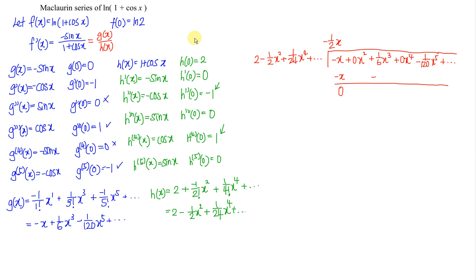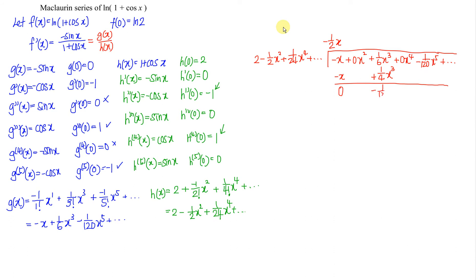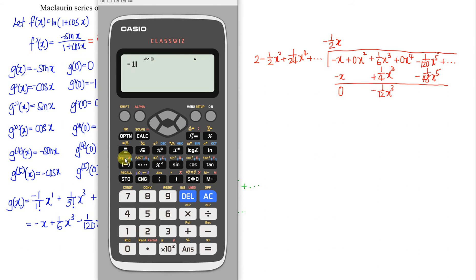Continuing the long division: negative times negative gives positive, giving 1 over 4 times x cubed for the subtraction. We then subtract: 1 over 6 minus 1 over 4 equals negative 1 over 12, giving negative 1 over 12 times x cubed. For the next term, x times x to the power of 4 gives x to the power of 5. Negative, positive, negative: 1 over 48, so we have negative 1 over 120 minus negative 1 over 48.